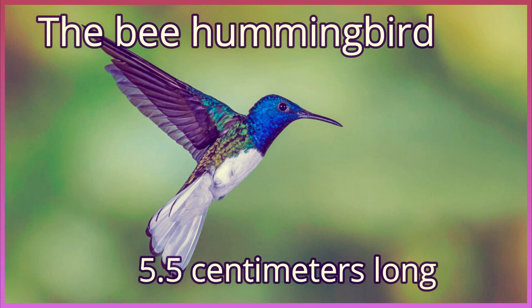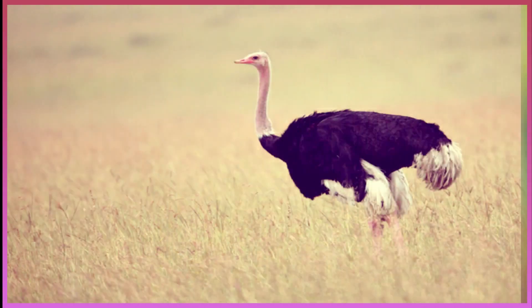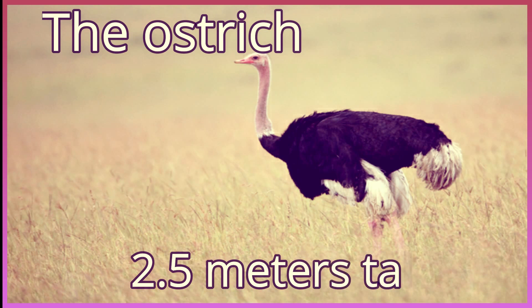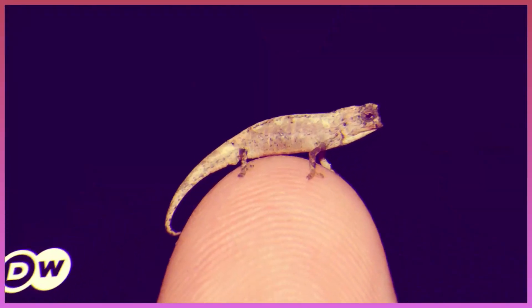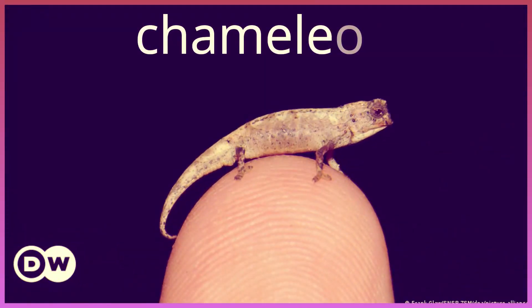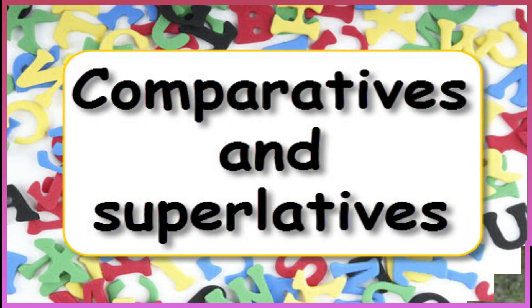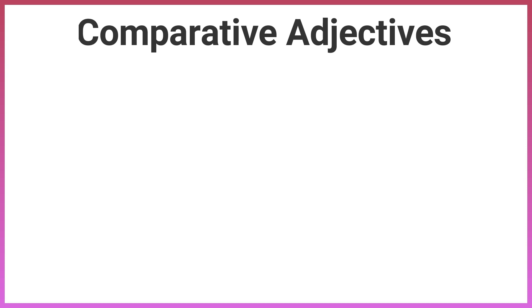The smallest bird is the bee hummingbird, which is about 5.5 centimeters long. It lives in Cuba. The biggest bird is the ostrich; it can be 2.5 meters tall. Ostriches are faster than leopards, but they can't fly. In 2012, scientists discovered a tiny chameleon in Madagascar — people think it is the smallest reptile in the world at just 30 millimeters long.